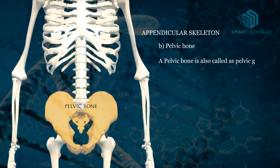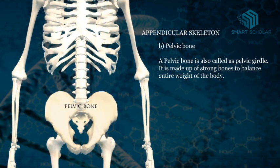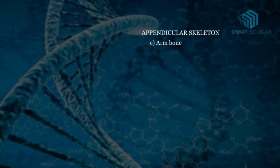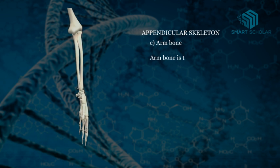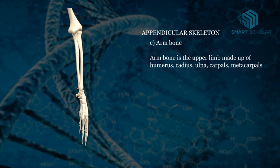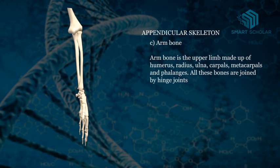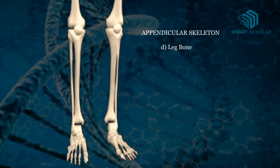Pelvic bone, also called the pelvic girdle, is made up of strong bones to balance the entire weight of the body. Arm bone is the upper limb made up of humerus, radius, ulna, carpals, metacarpals and phalanges. All these bones are joined by hinge joints which allow the limb to move only in one direction.